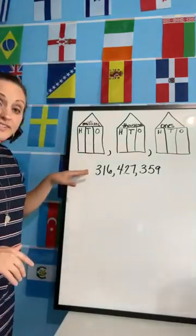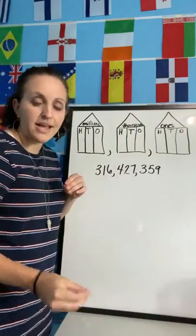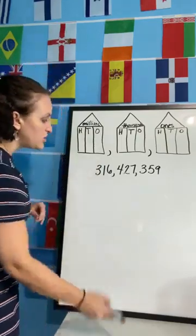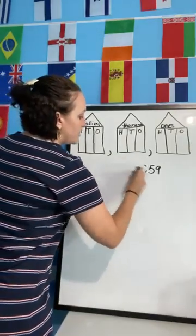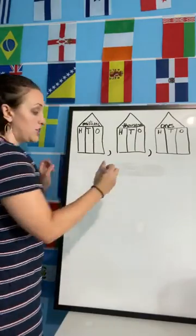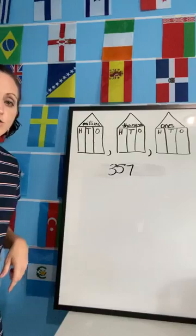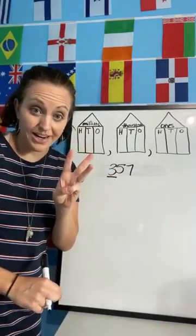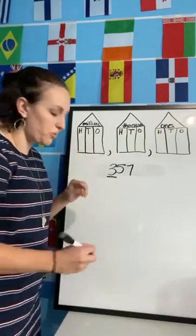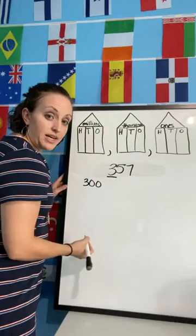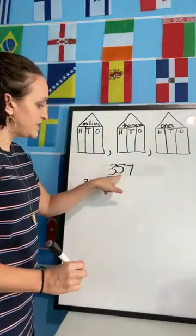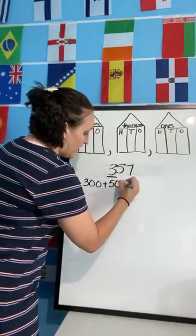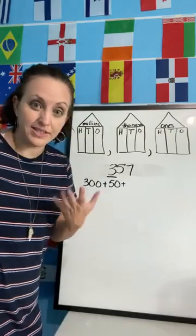And now the other way that we can write numbers, this is called standard form. Word form is writing out the words. In expanded form, we're talking about the value of each digit. The value of each digit. I'm going to do this with a smaller number to start because if I start with this big old number, it might be confusing. I'm going to start with actually just a three-digit number. 357. So when I'm looking at this, what is the value of my three? Well, the three is not worth three, right? This is in the hundreds place. So the value of that three is 300. And when I'm writing in an expanded form, I'm adding the values together. What's the value of my five? Well, the five is in the tens place. So it's five tens or 50. And then my value of my seven, well, it's worth seven because it's in the ones place.